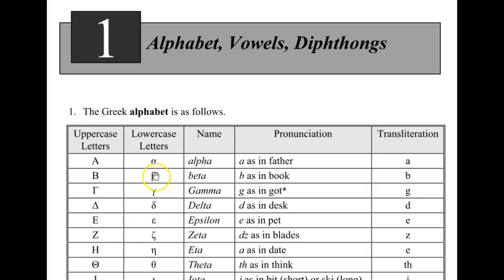The first letter is Alpha. Alpha — AH as in father. The second is Beta, pronounced B as in book.